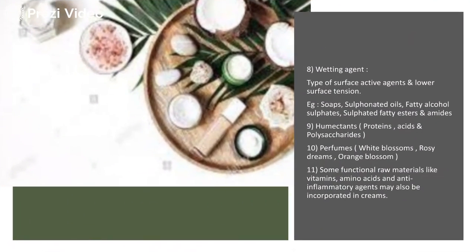Wetting agents are substances added to lower the surface tension of the final cream — they are surface active agents. Substances used include soaps, sulfonated oils, fatty alcohol sulfates, and sulfated esters and amides. Humectants are also added during formulation to increase hydration levels; examples include different kinds of proteins, acids, and polysaccharides.